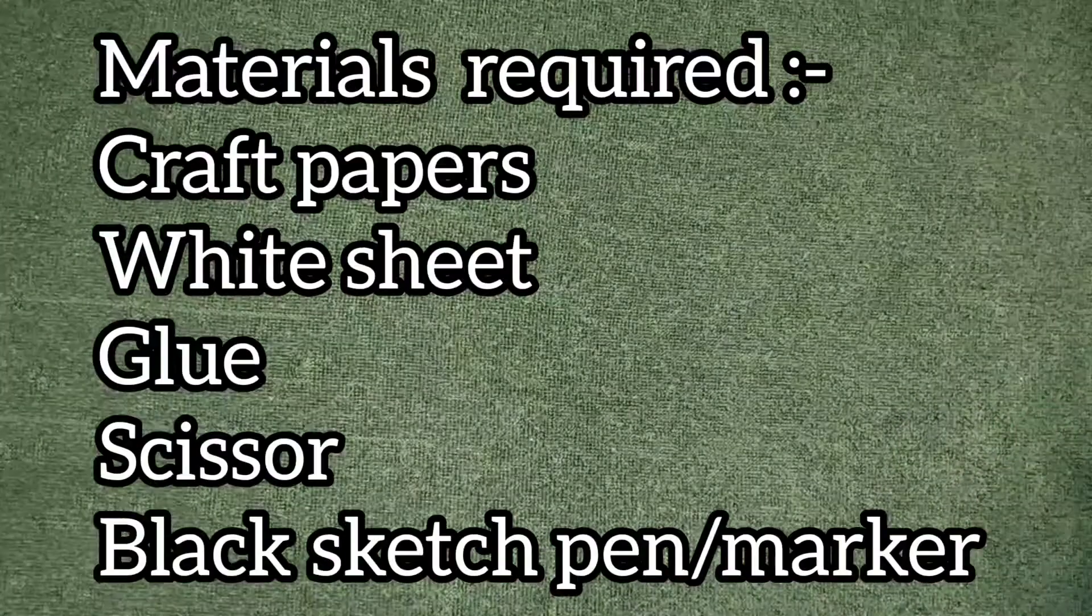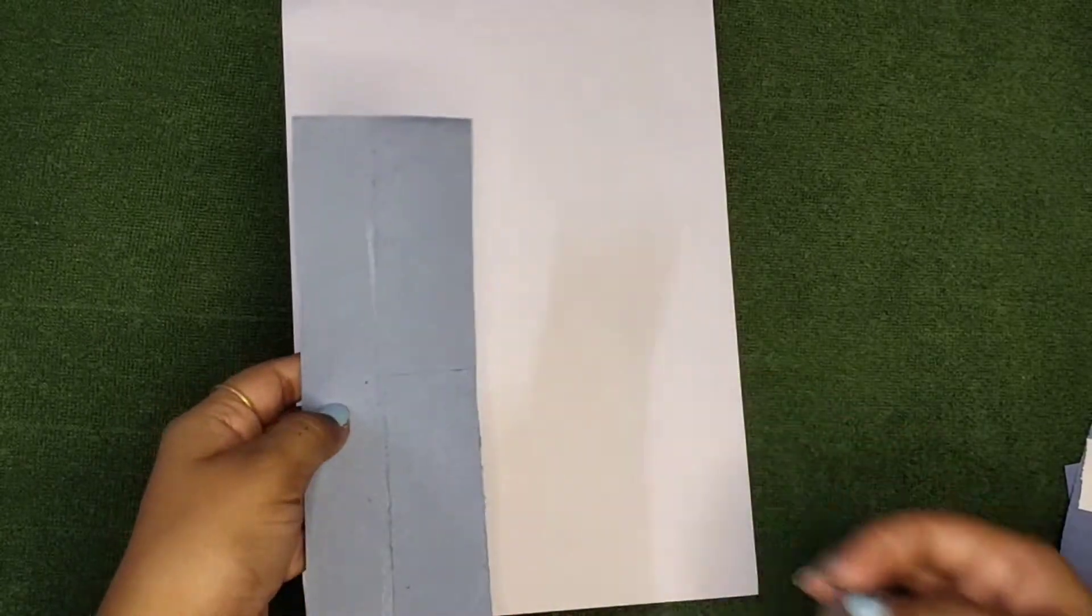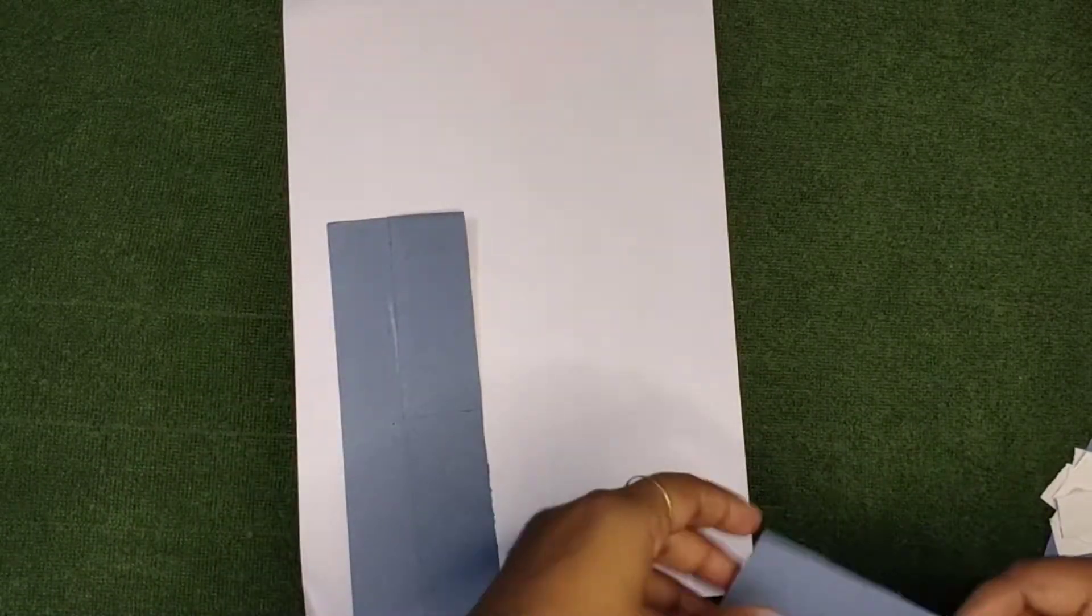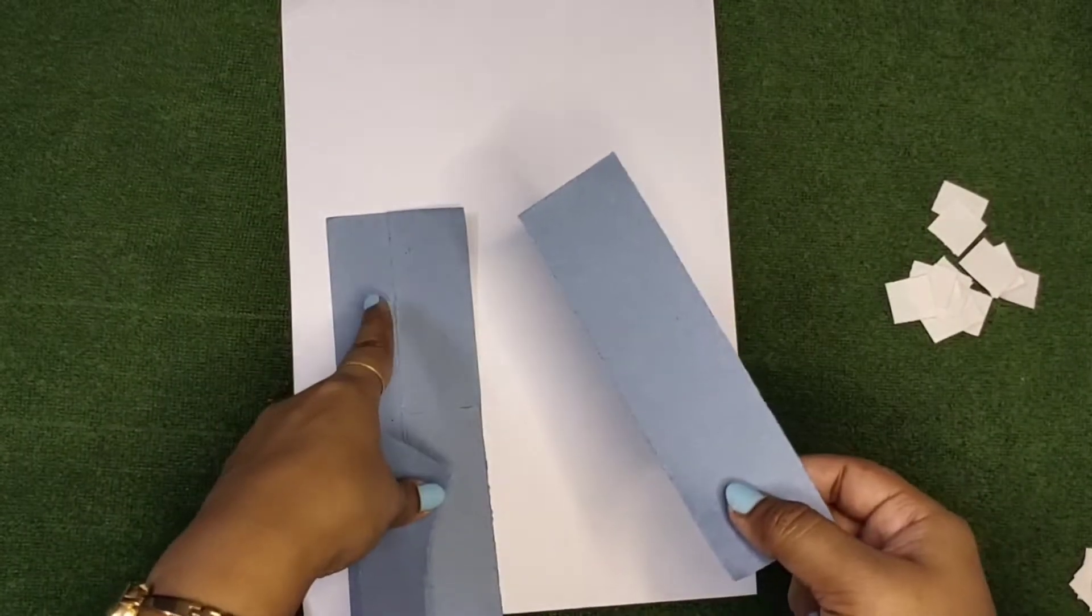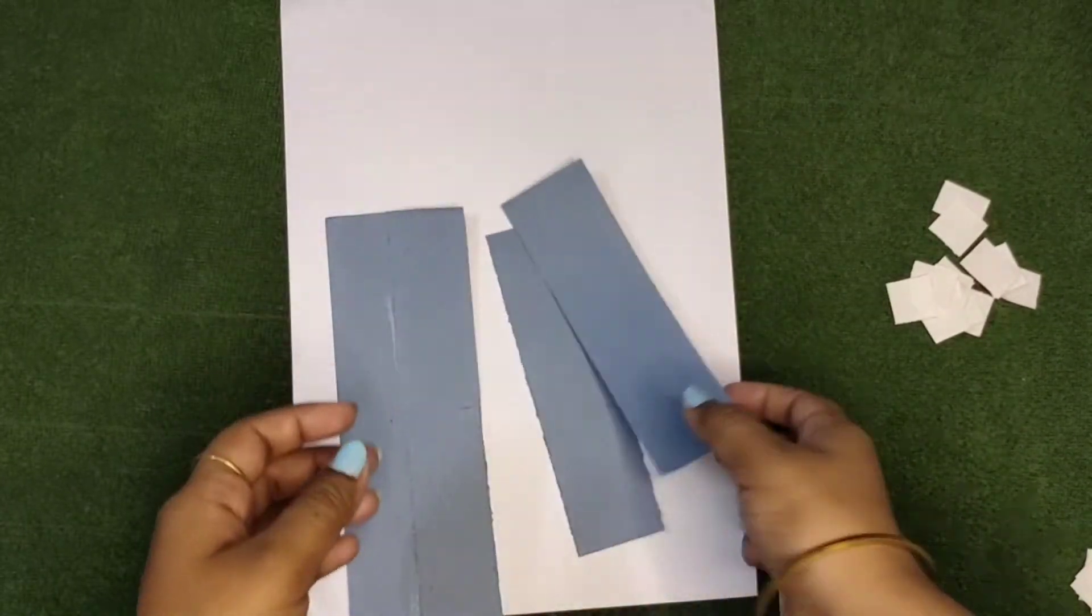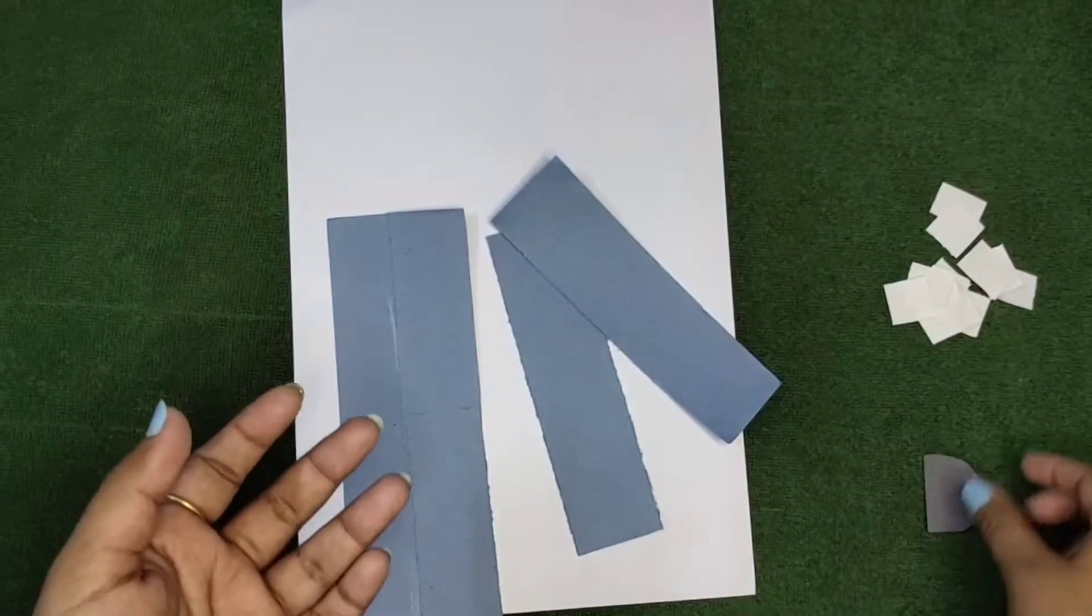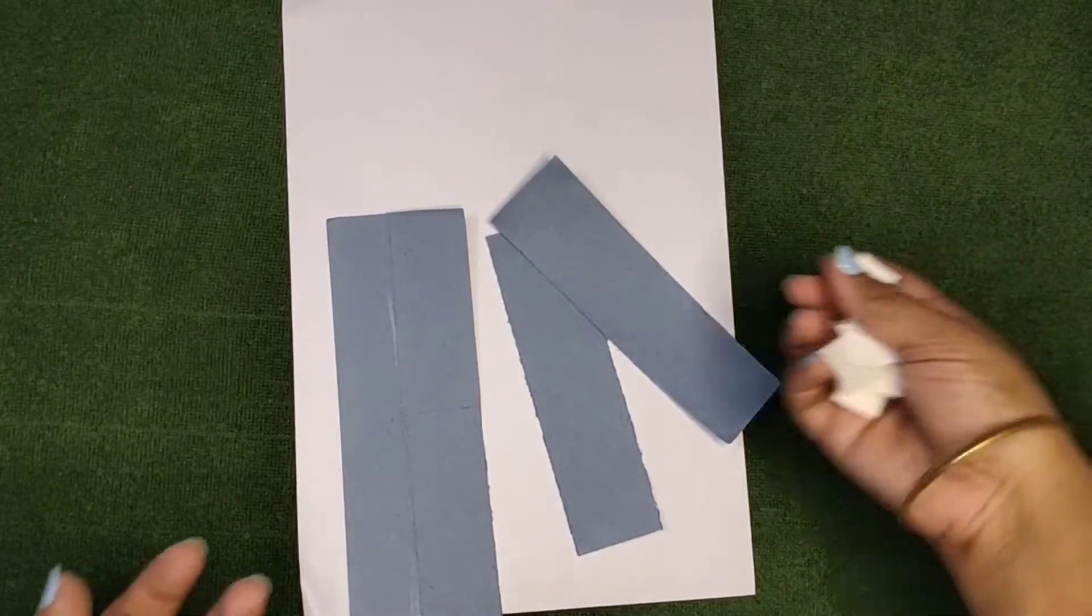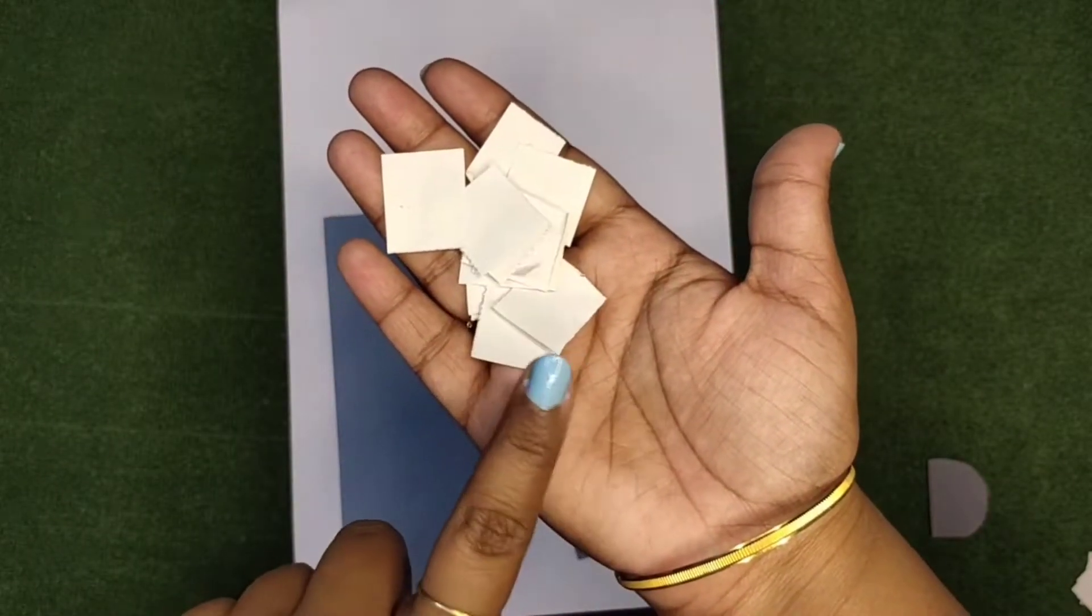Now let's begin with the craft work. I am taking a white sheet first and one straight line cut out like this and two straight lines cut out like this, and two straight lines also in blue color but it will be shorter than this one. And one cut out like this in a D shape. And we will also need square shaped small pieces cut outs of white paper.